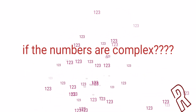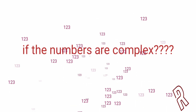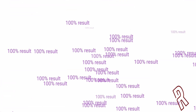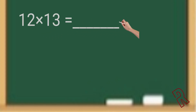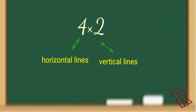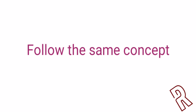For all students watching, you can use this method to check whether your answer is correct and be confident of getting full marks before your result. So let's start. For 12 × 13, in the previous session we had only single digits — for example, 4 × 2. For the first number we drew horizontal lines and for the second number we drew vertical lines, then counted the number of intersecting points.